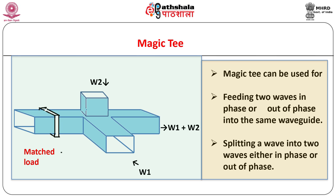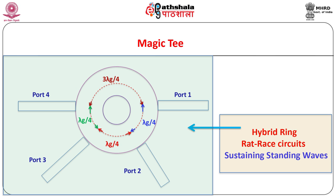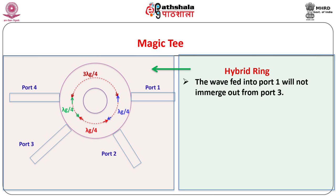When one of the two collinear arms is terminated by a matching load, magic T provides only one arm for some applications as shown. An extension of the principles used in hybrid T gives rise to a new hybrid component known as a hybrid ring. Here in the hybrid ring four arms are connected by means of series or parallel junctions to an annular ring of proper electrical length at proper intervals as shown. Hybrid rings — also called rat race circuits — are used to sustain standing waves. The wave fed into port 1 will not emerge out from port 3.